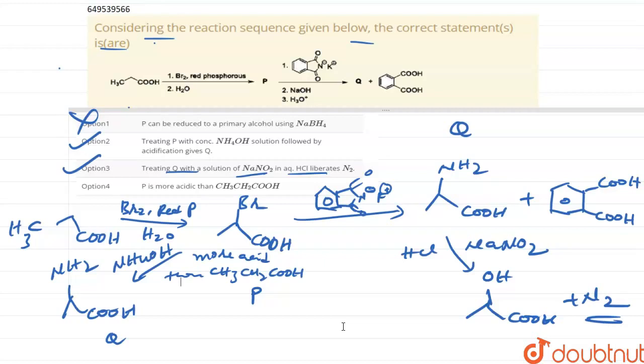P is more acidic than CH3-CH2-COOH, so this one is correct. So B, C, D are the correct statements in the given question. This is the answer, thank you.